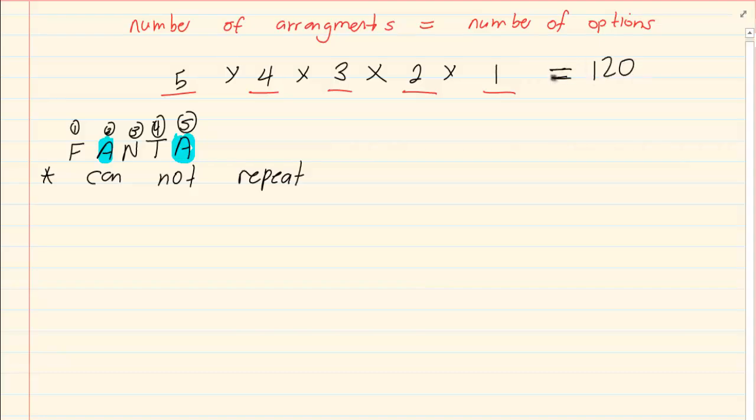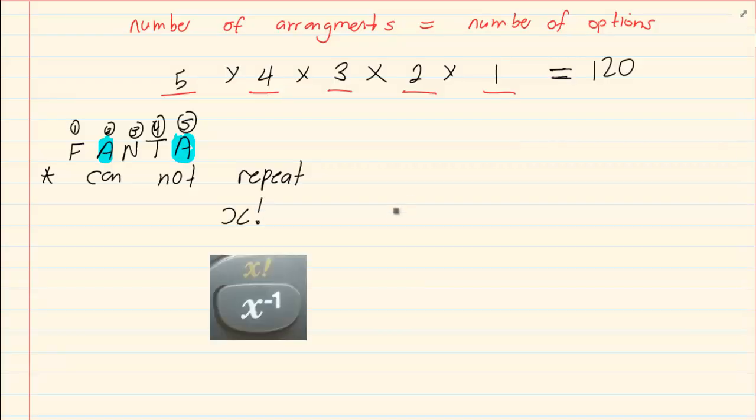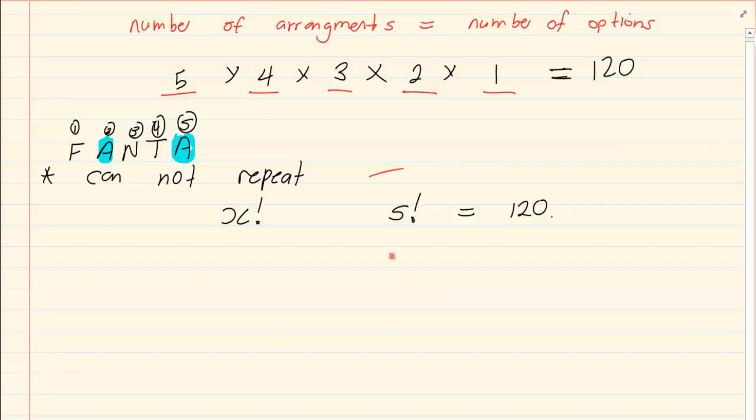Now if you look on your calculator there is a button that looks like this. Now had you pressed five and you pressed that button you would still get 120. What this is called or this concept is called factorial.